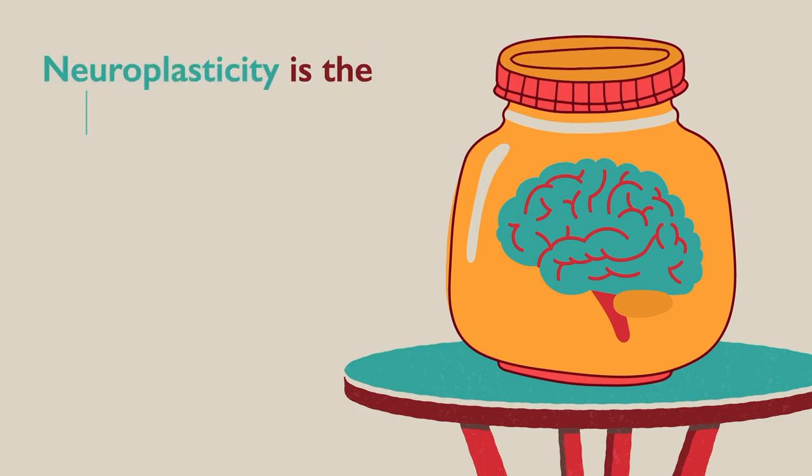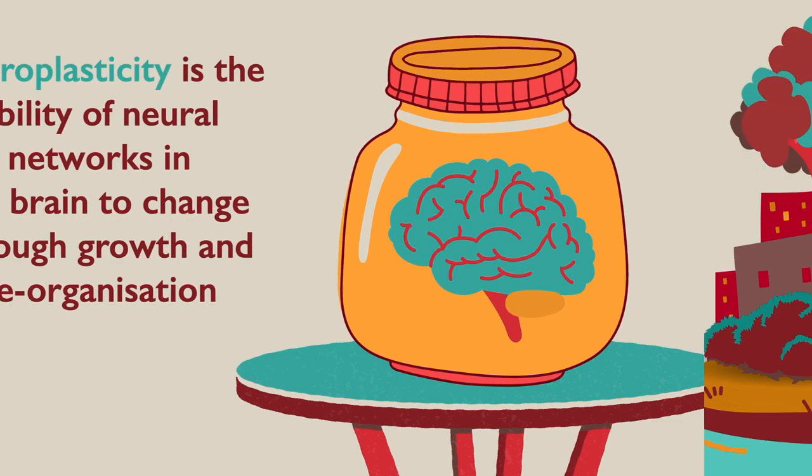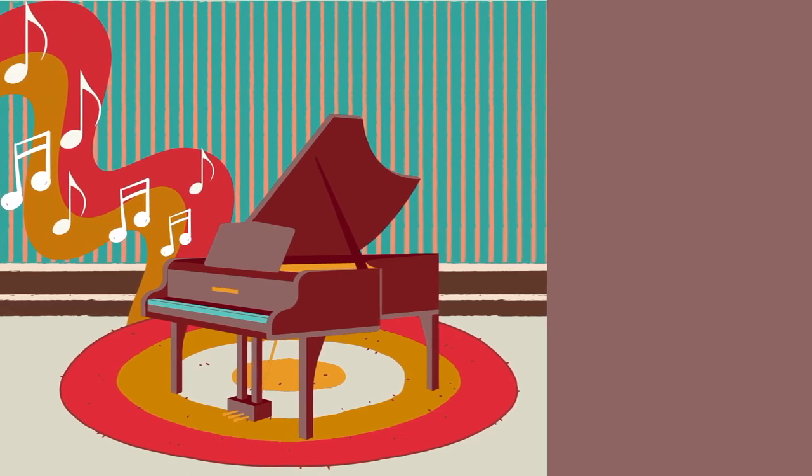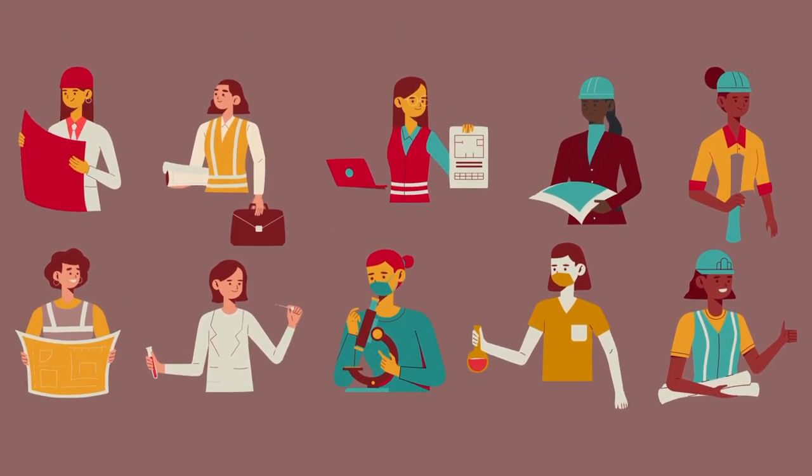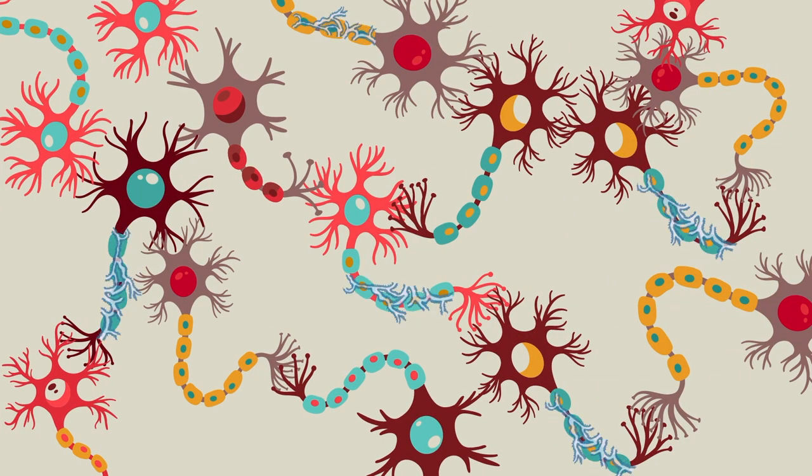Neuroplasticity is defined as the ability of neural networks to change through growth and reorganization. So when you practice sports, or play an instrument, or do just about anything for enough time, the brain actually changes itself to function differently than it did before.